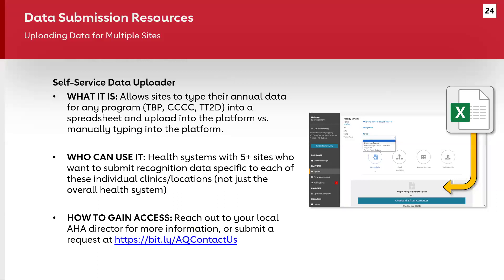If you're submitting data for multiple sites, there's an option to put all data into one CSV file and upload at one time. If you're only submitting for a couple of sites, the program form method is easiest. But if you have 10, 20, or 60 sites, the uploader tool will save significant time. Work with your local AHA representative for templates, detailed instructions, and demo videos. If you're not yet in touch with a local director but want to pursue this option, reach out via our Contact Us form.